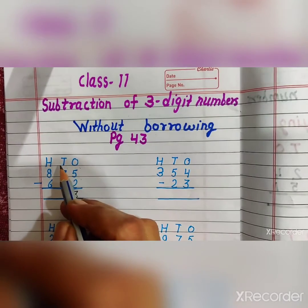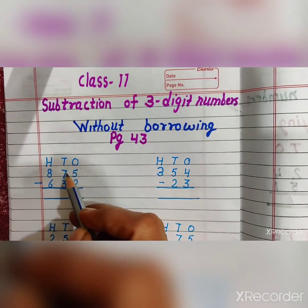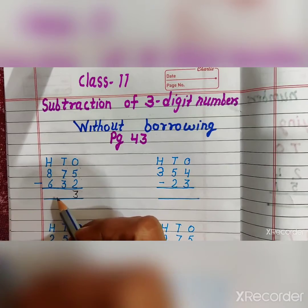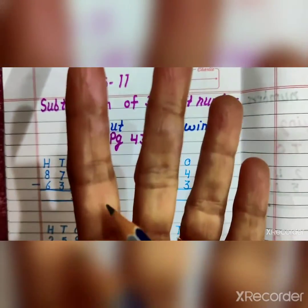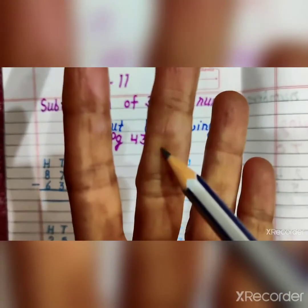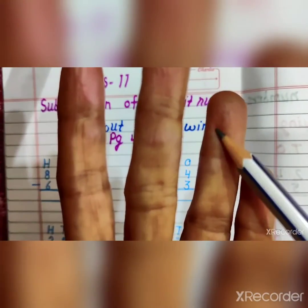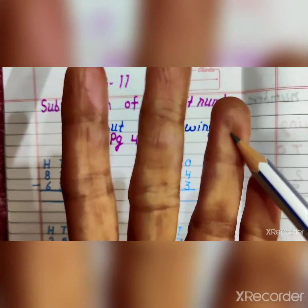And next, ten's place. 7 minus 3. Count. 1, 2, 3, 4, 5, 6, 7. You will take 7 fingers.